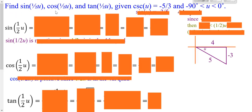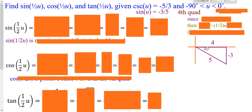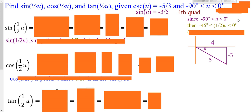Over here we're dealing with half angles, also with an angle in the fourth quadrant. We're given cosecant, which is the reciprocal of sine, so really the sine is negative 3 over 5. I draw my angle u in the fourth quadrant. Now we actually have to figure out where half u is. We know u is in the fourth quadrant, meaning it's between negative 90° and 0°. To find where half u is, I multiply all three parts by 1 half, so 0 to negative 45°, which is also in the fourth quadrant.